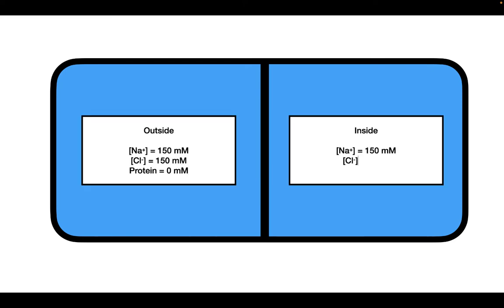This container is going to be filled with a solution containing water and three different solutes. We have two compartments — the inside and the outside. The sodium concentration outside is equal to the sodium concentration inside. The chloride concentration outside is 150 millimolar and the chloride concentration inside is zero millimolar. We have zero protein outside and one millimolar worth of protein inside, or 150 milliequivalents. We'll talk about what that means in a little bit.